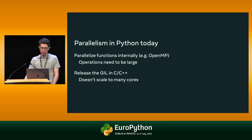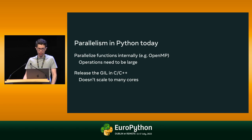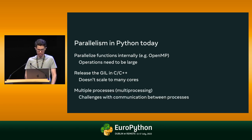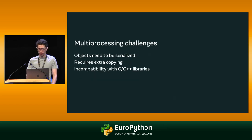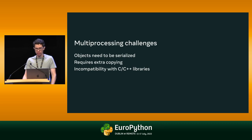Second, C API extensions can release the global interpreter lock around long-running operations so that multiple operations can overlap, but it usually doesn't scale well beyond a few cores because contention on the GIL quickly becomes an issue. You can also use multiple processes, including through Python's multiprocessing library. The main challenge with processes is that communication between them is more expensive — objects need to be serialized to be sent from one process to another. Not all objects support serialization, and many C and C++ libraries don't work well across processes, even if they support multiple threads.